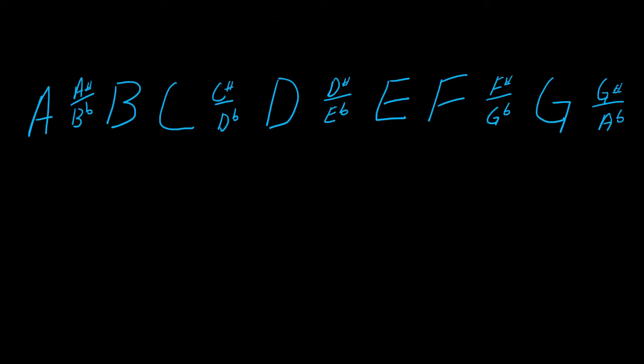The first thing you're going to need is to get out or write out the musical alphabet, which is covered in other lessons. For this purpose, I've already written it out. I'm just going to show you 12 notes — 12 different notes, and five of them have different names for them.